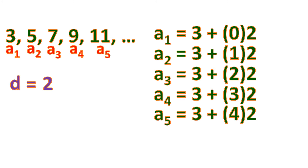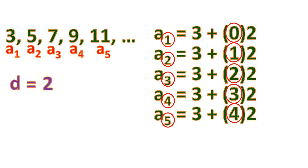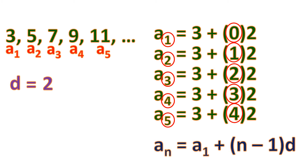Now, what pattern do you observe in these equations? Notice that for the 1st term, you multiply the common difference by 0 (which is 1 minus 1). For the 2nd term, it's 1 (which is 2 minus 1). For the 3rd, it's 2; for the 4th, it's 3; and for the 5th, it's 4. So for the nth term, a sub n equals a sub 1 plus (n minus 1) times the common difference d. That is the formula to find the nth term of an arithmetic sequence.